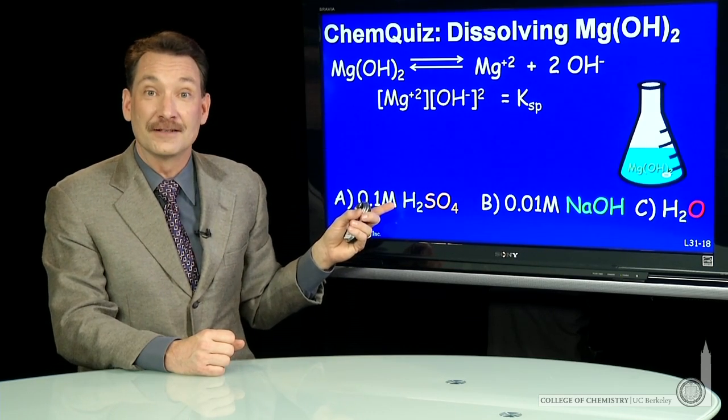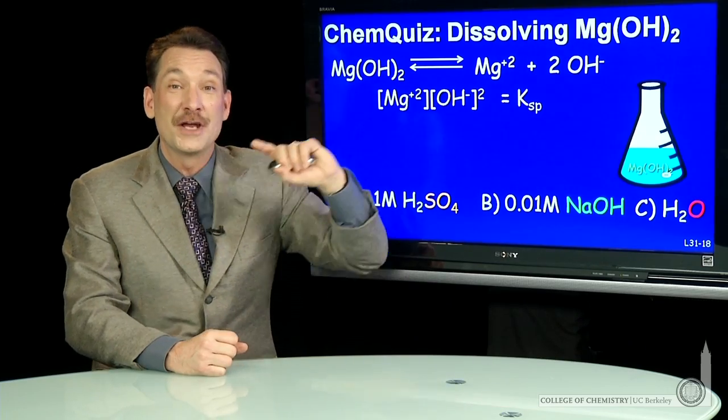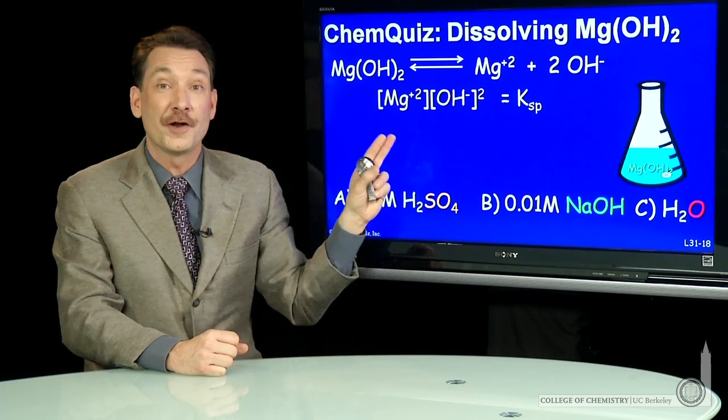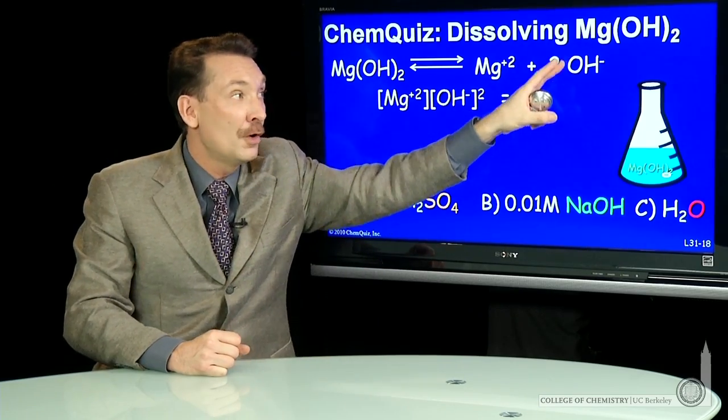This A is a strong acid. Adding a strong acid will react with the OH⁻ quite strongly. They'll form water. H₃O⁺ and OH⁻ form water. That will lower this concentration.